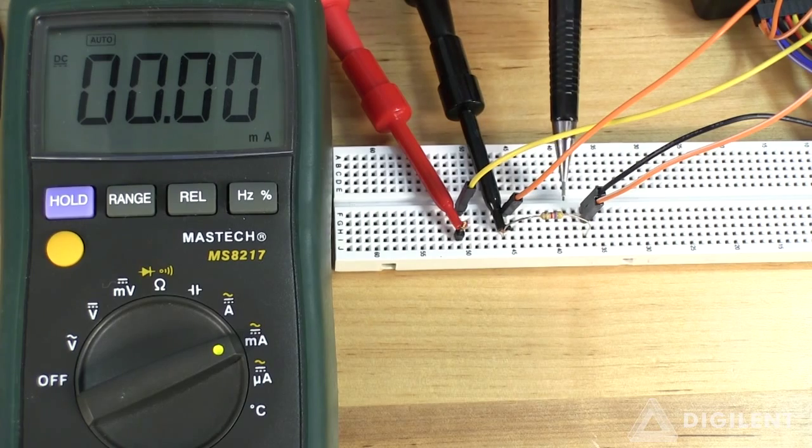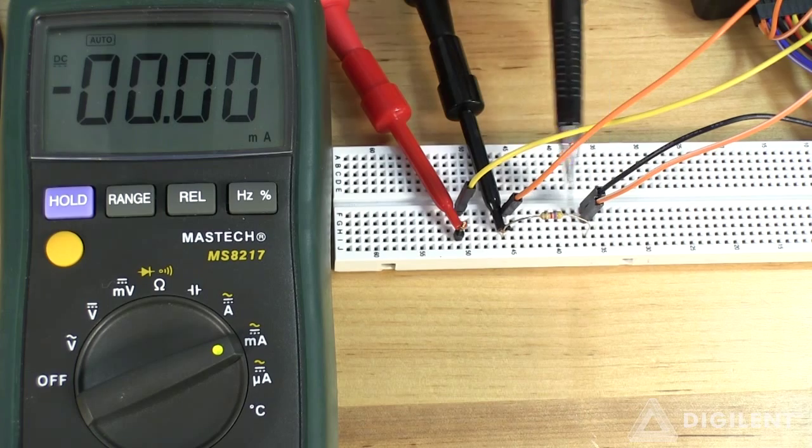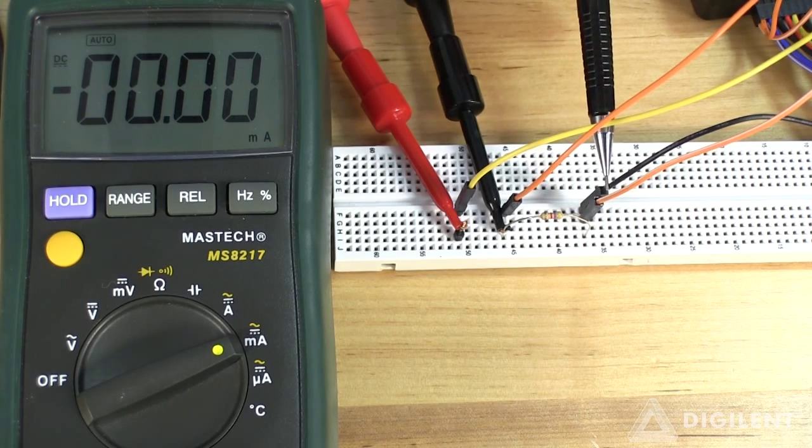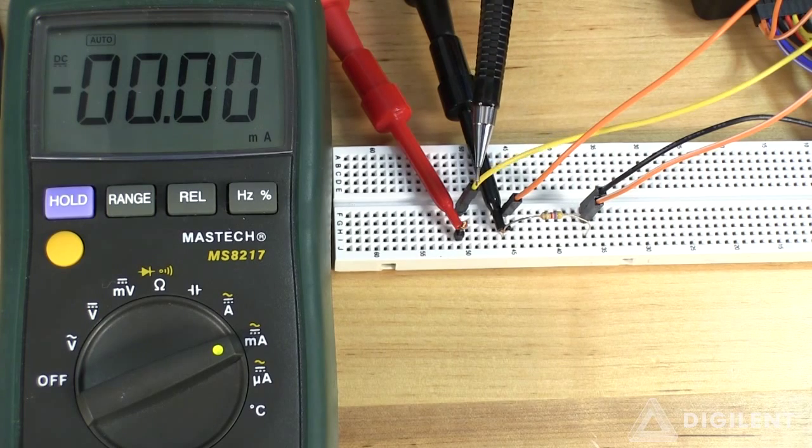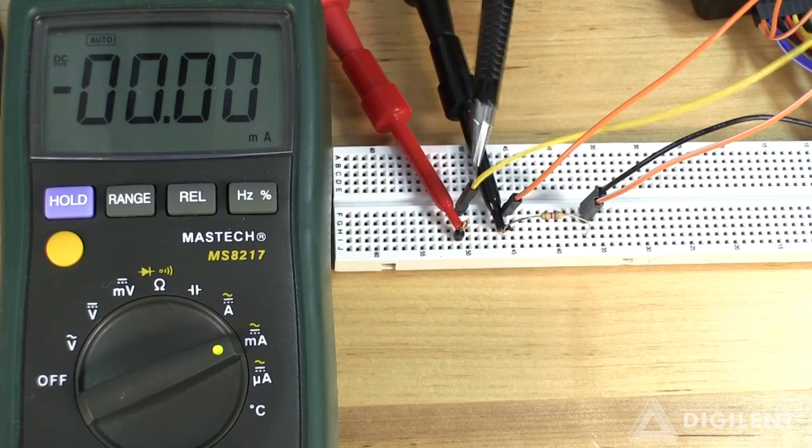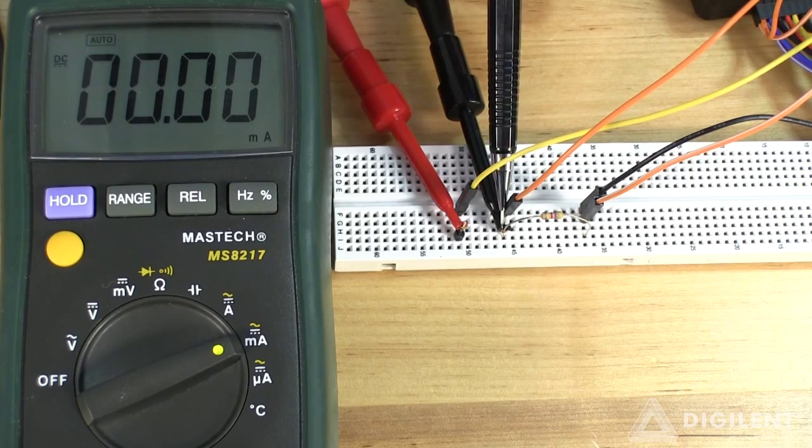This is our circuit. Our unknown resistor is here. We're using channel 1 of the analog discovery voltmeter, the two orange wires, to measure the voltage across the resistance. Ground is here. I'm using channel 1 of the waveform generator, the yellow wire, to apply power to the circuit. The ammeter is connected between our power supply and this terminal of the resistance.